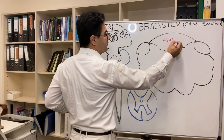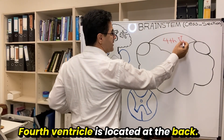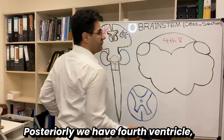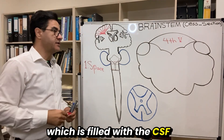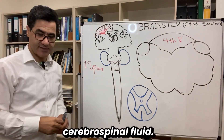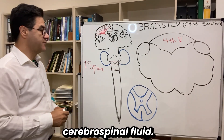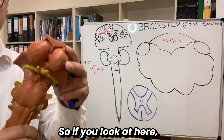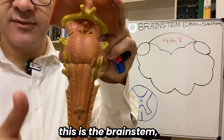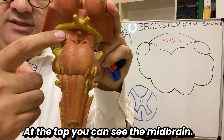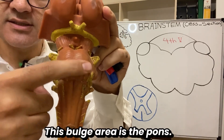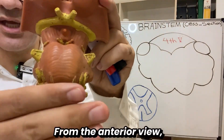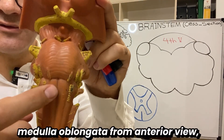The fourth ventricle is located at the back. Posteriorly we have the fourth ventricle, which is filled with CSF — cerebrospinal fluid. Looking at the anterior view of the brain stem, at the top you can see the midbrain. The bulge area is the pons, and down here we have the medulla oblongata from the anterior view.